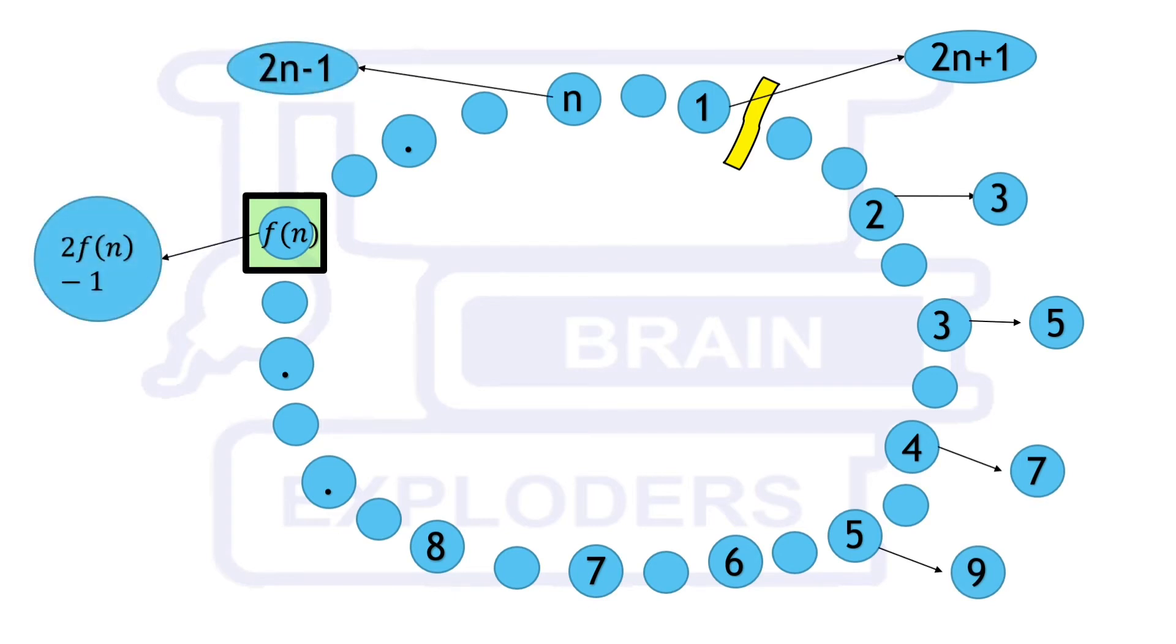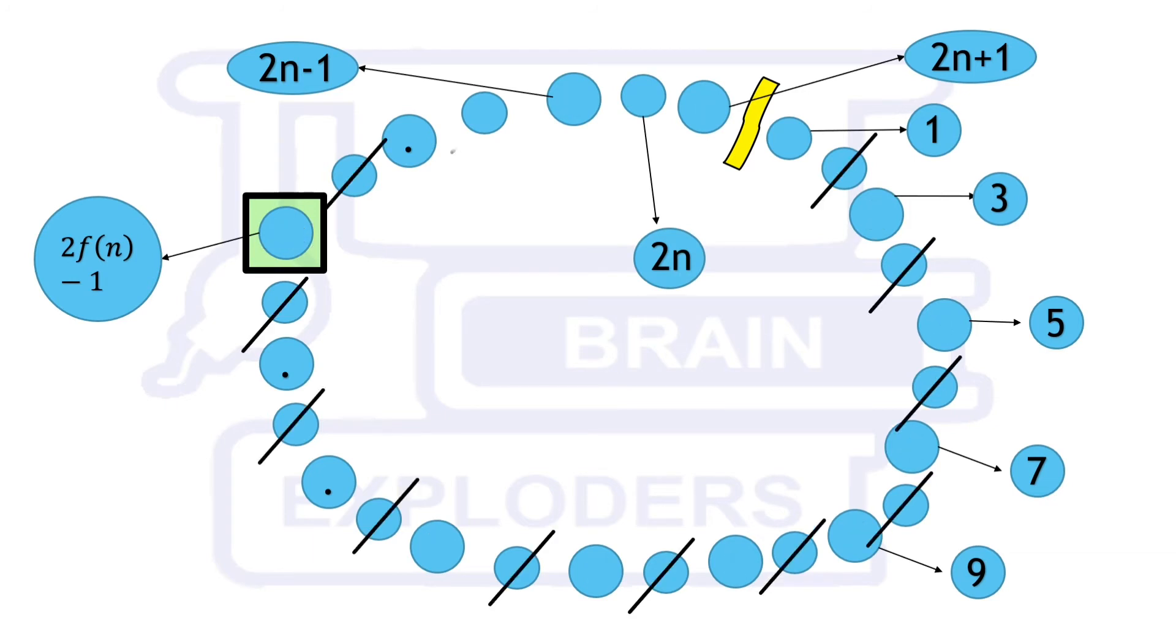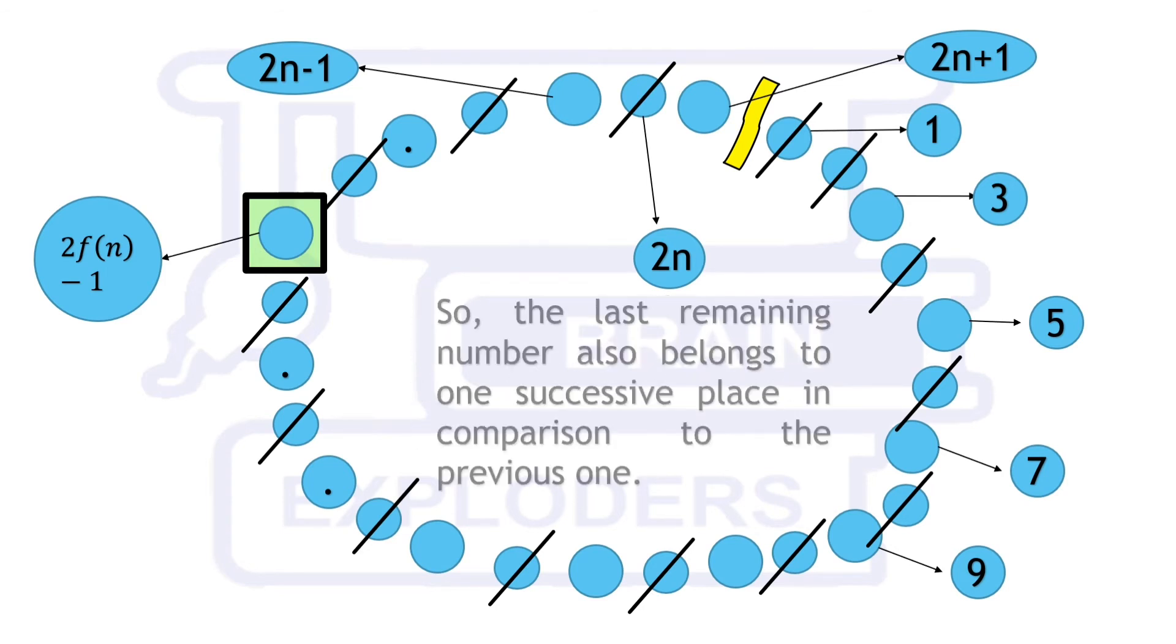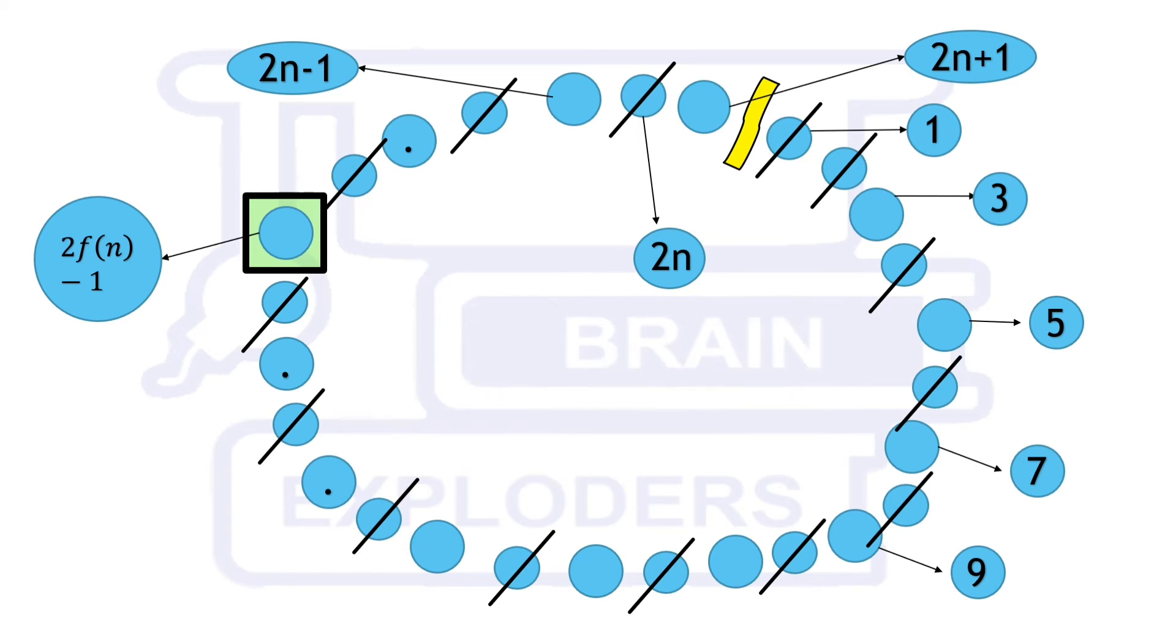Here also, all the new persons are killed before the previous persons. The new cancellation cycle starts from one successive place in comparison to the previous cycle. So, the last remaining number also belongs to one successive place in comparison to the previous one. Position corresponding to the position next to f(n) is 2 times f(n) plus 1.